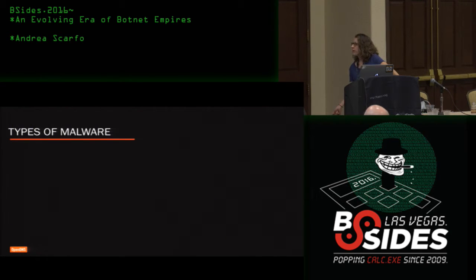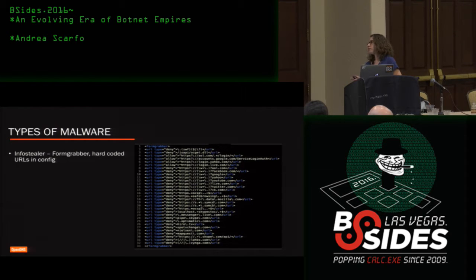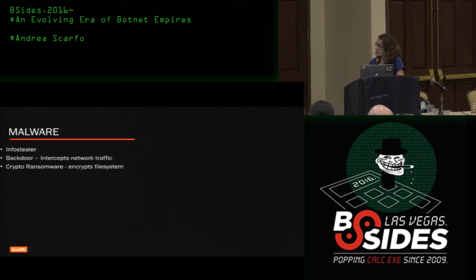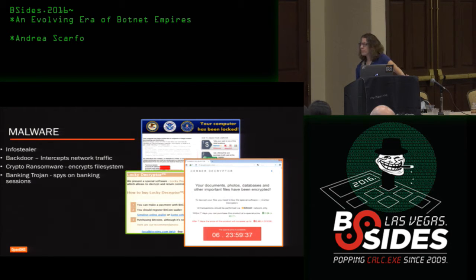After starting an infection on a machine, bots can also drop different types of malware. For a form grabber, here's an example of an older version of Dridex with preconfigured URLs that it spies on. It can be used as a Trojan backdoor to intercept network traffic. The most famous right now is crypto ransomware, which encrypts the file system and demands a ransom for the decryption key. Then banking Trojans like Dridex that spy on banking sessions, click fraud bots like the BDEP Trojan to generate revenue by clicking on ads, and of course use as a DDoS bot.